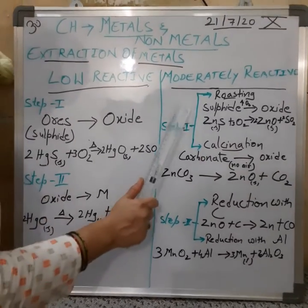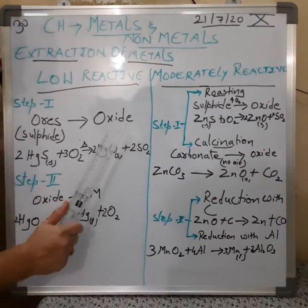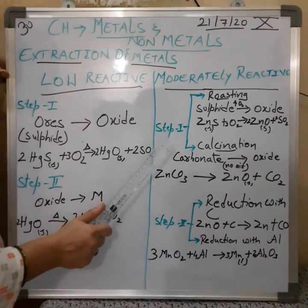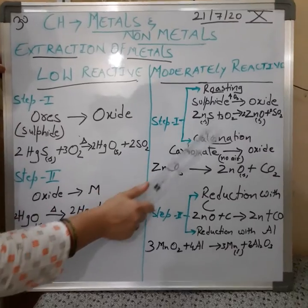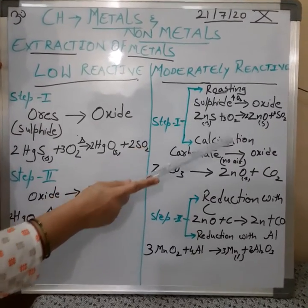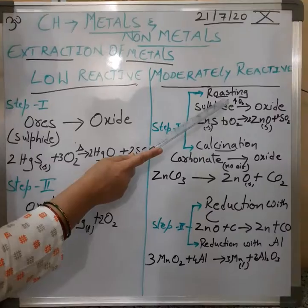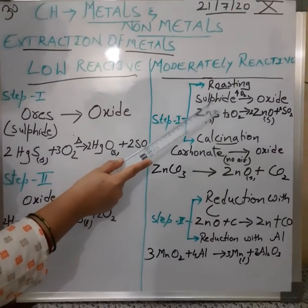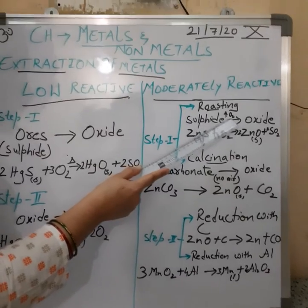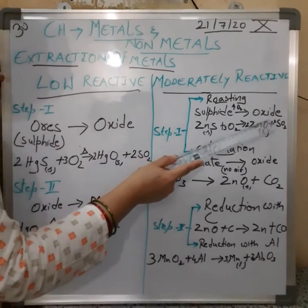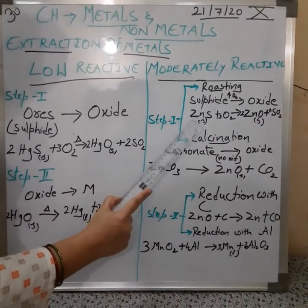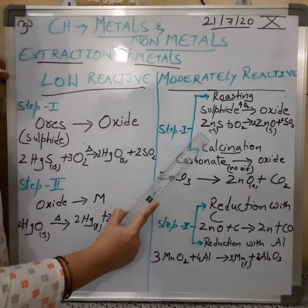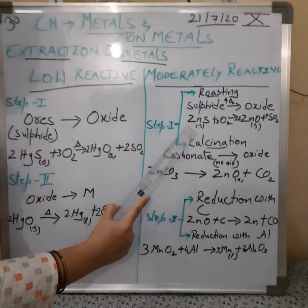Now for the moderately reactive series, there are again two steps. Step one is the heating process, done in two ways: roasting and calcination. Roasting involves heating sulphide ores in excess air to obtain the metal oxide. A good example is zinc — zinc sulphide, also called zinc blende.